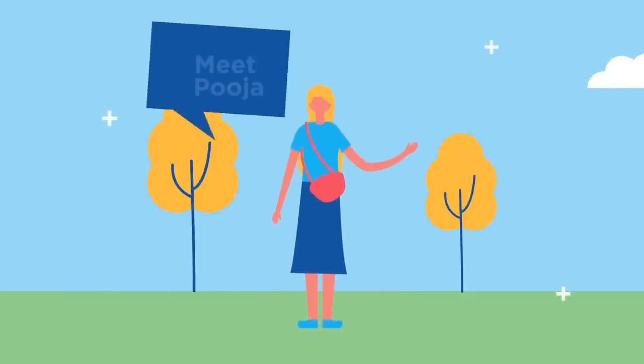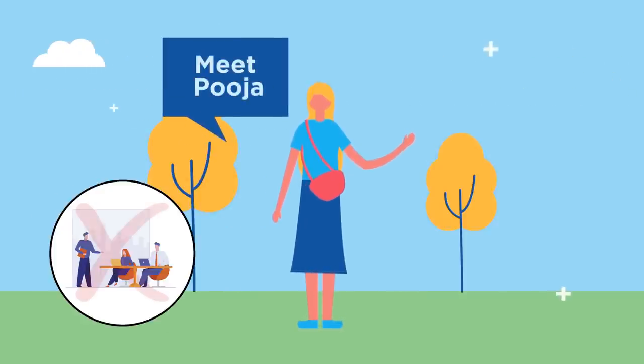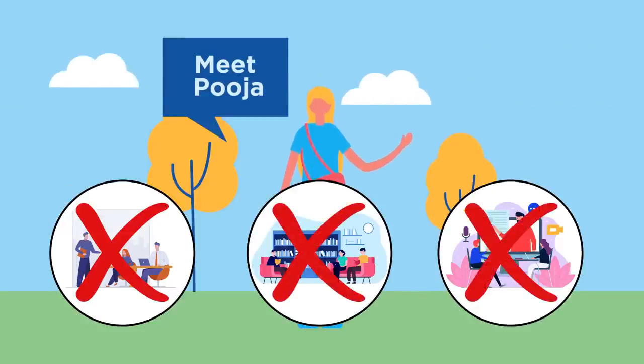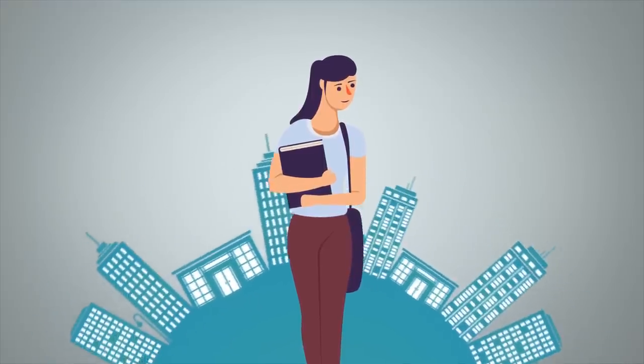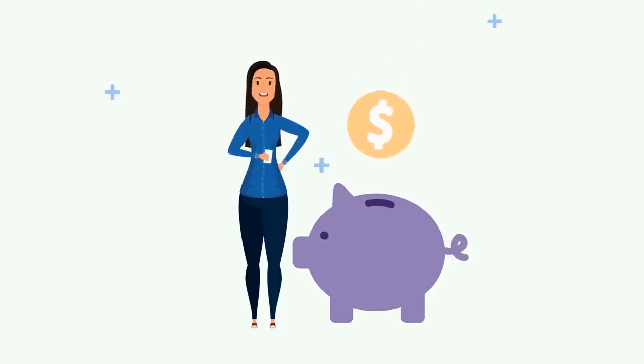And then we have Pooja. She lives in a small village in Orissa where there is no coaching institute, no libraries, and no mentors who can guide her. She cannot relocate to another city, nor can she afford joining any coaching class that is heavy on the pockets.